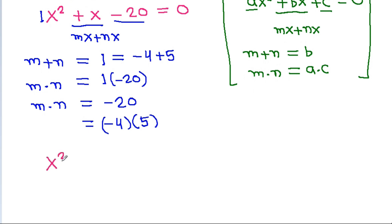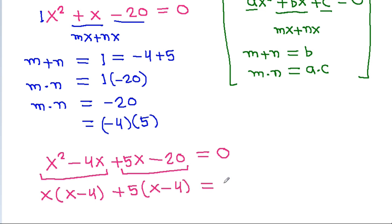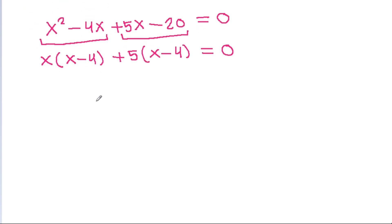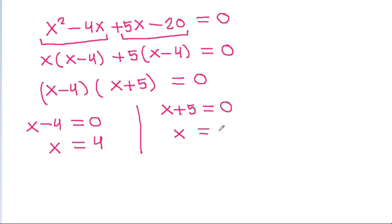So it is x squared, and plus x is written as minus 4x plus 5x minus 20, equal to 0. Grouping: x(x minus 4) plus 5(x minus 4) is equal to 0, giving (x minus 4)(x plus 5) is equal to 0. So either x minus 4 equals 0, meaning x equals 4, or x plus 5 equals 0, so x equals minus 5.